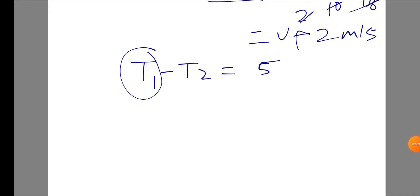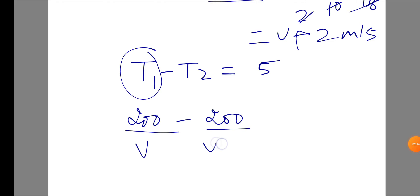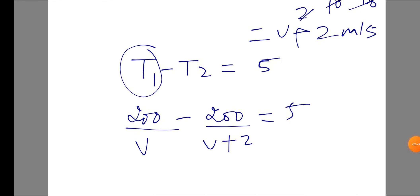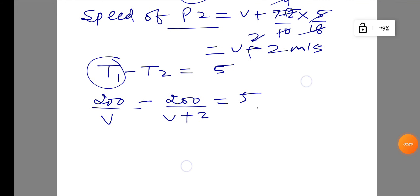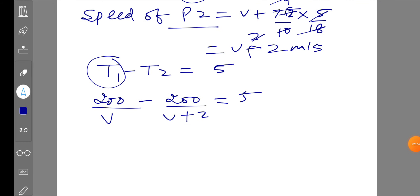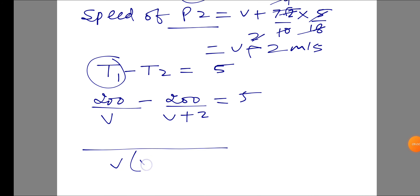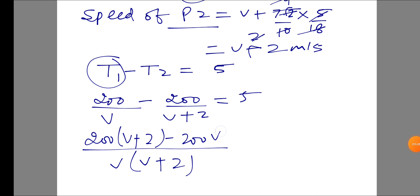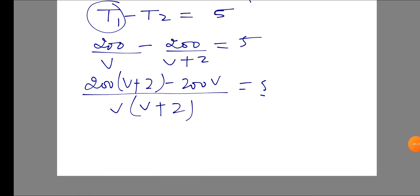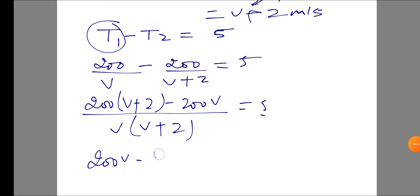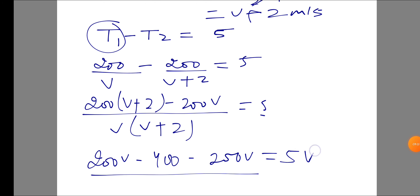The time formula is distance divided by speed. Distance is 200 meters. Person 1's time T1 = 200/V, and Person 2's time T2 = 200/(V+2), and T1 minus T2 equals 5. After that, we take the LCM, so we get: V(V+2) in the denominator, giving us 200(V+2) minus 200V equals 5.